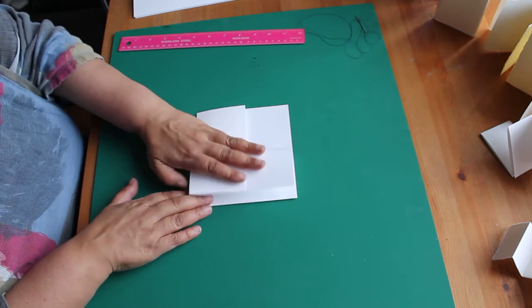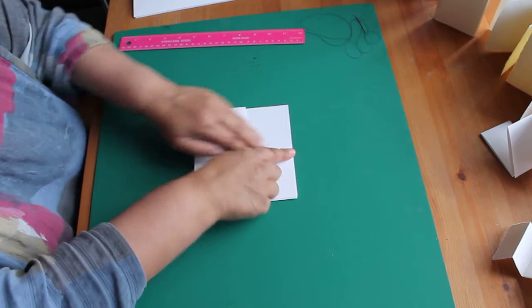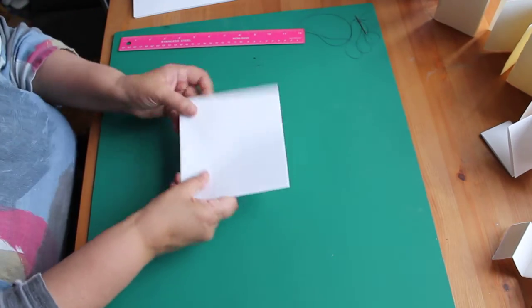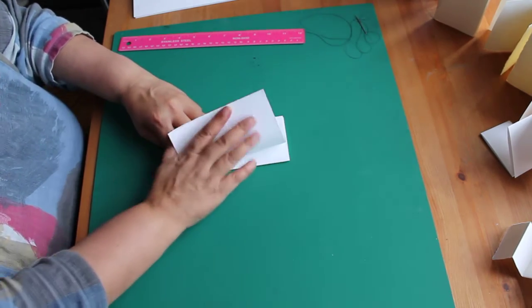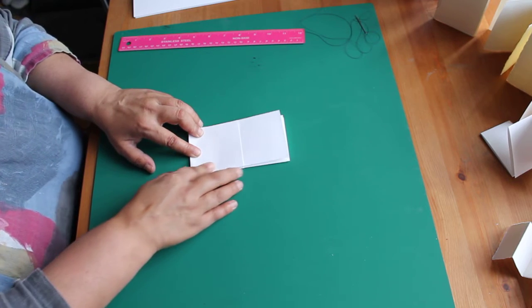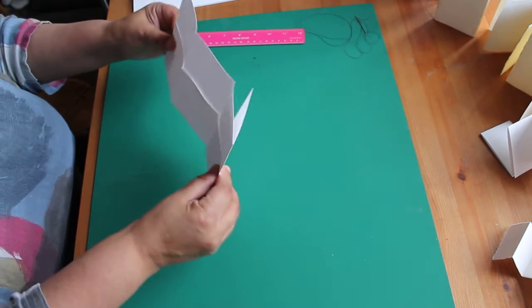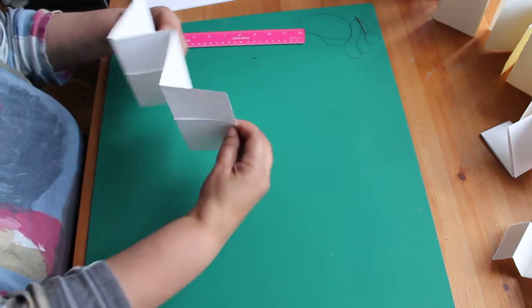Fold that half back. Turn it over. Fold the other half back. And then you have a concertina book with pockets.